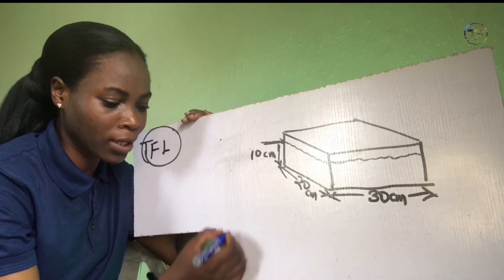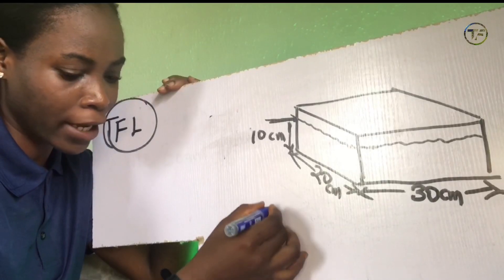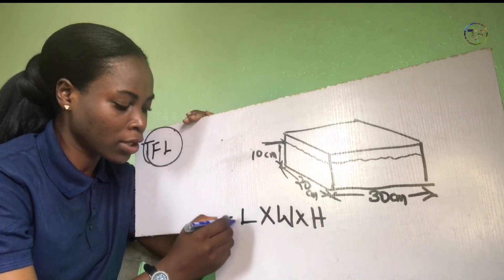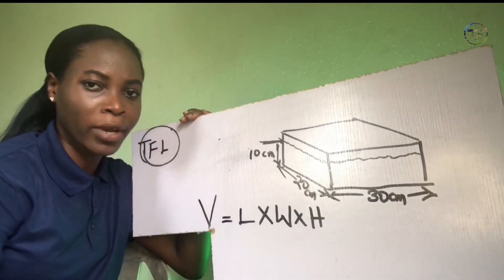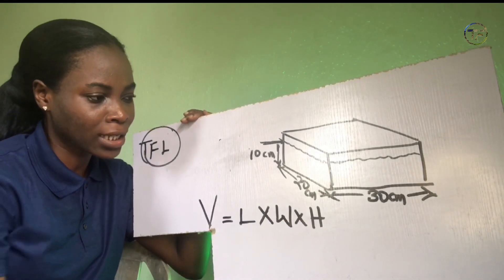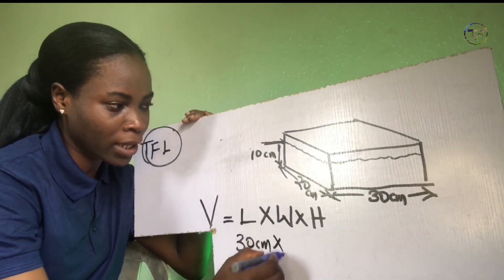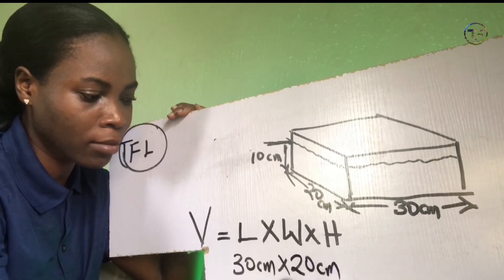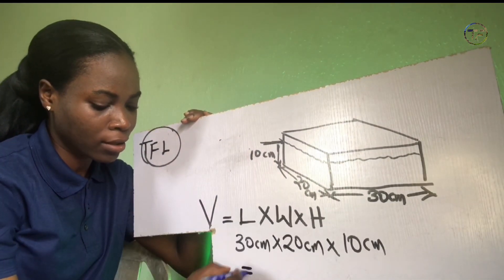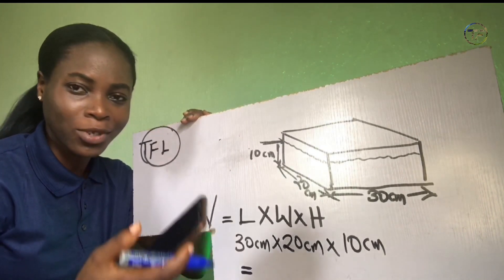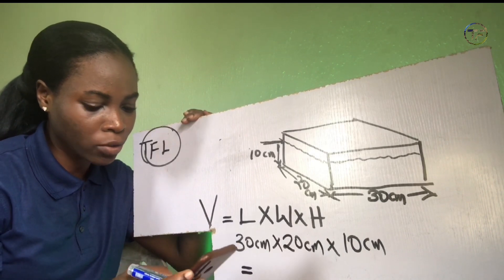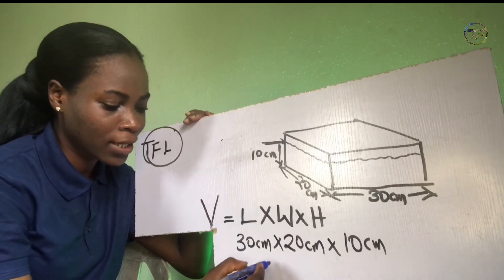In order to calculate the volume of water in this tank, you use the formula: length times width times height. So we have length 30 cm, multiplied by width 20 cm, multiplied by height 10 cm. You can use your calculator and calculate with me. So 30 times 20 times 10 — that is 6,000.